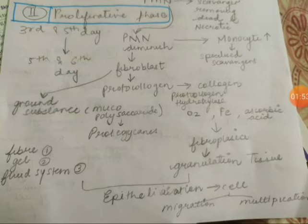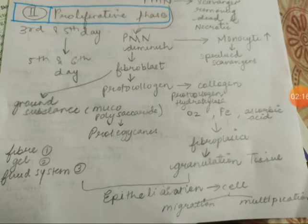Fibroblasts increase in this phase. The fibroblasts secrete procollagen, which is converted to collagen through a very important enzyme known as procollagen hydroxylase. Fibroblasts are also involved in the formation of ground substance, which is made up of mucopolysaccharides and proteoglycans — composed of fiber, gel, and fluid tissue.